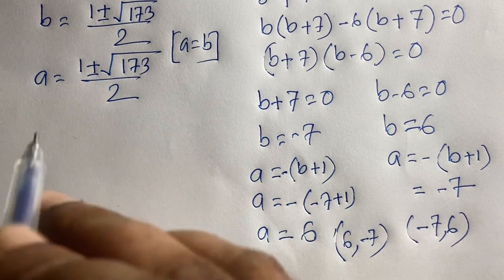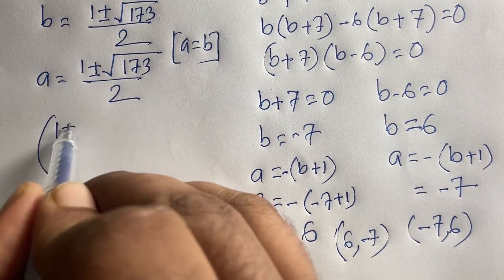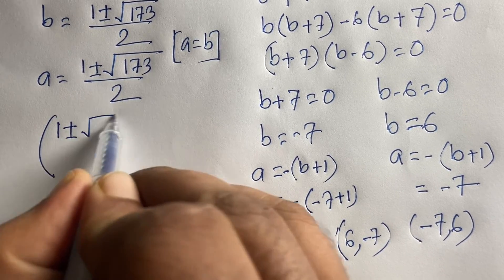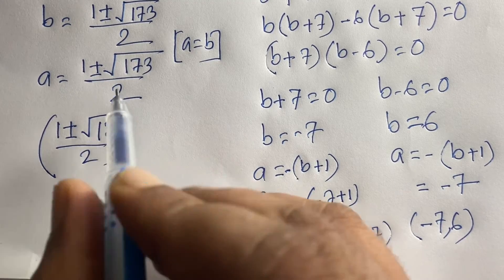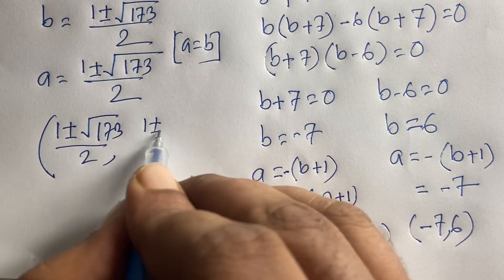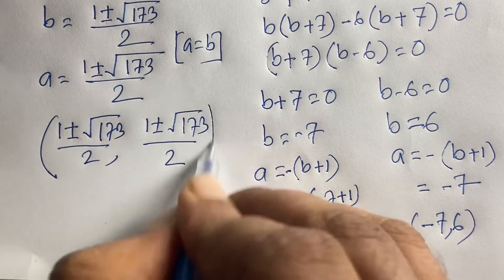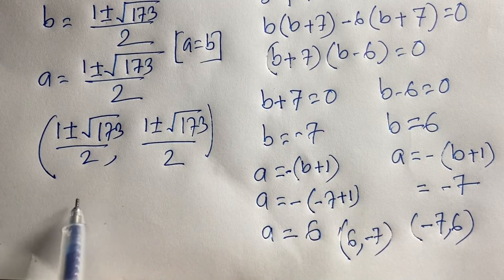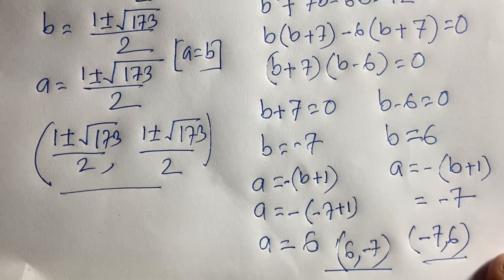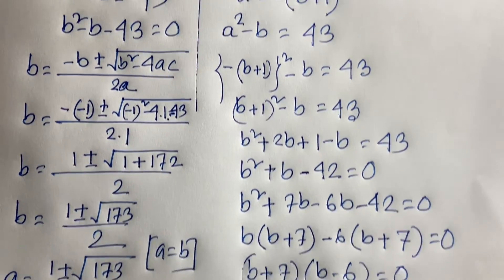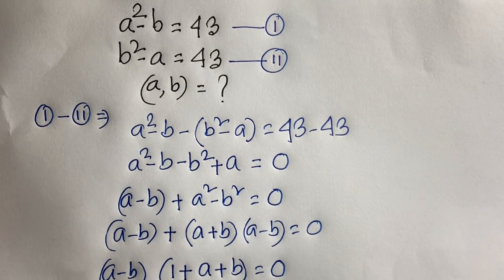So our final answers are: A equals 6 and B equals minus 7; A equals minus 7 and B equals 6; or A equals B equals (1 ± √173) / 2. Thank you all. If you enjoyed this video, please subscribe to my channel and like this video. Goodbye, take care.